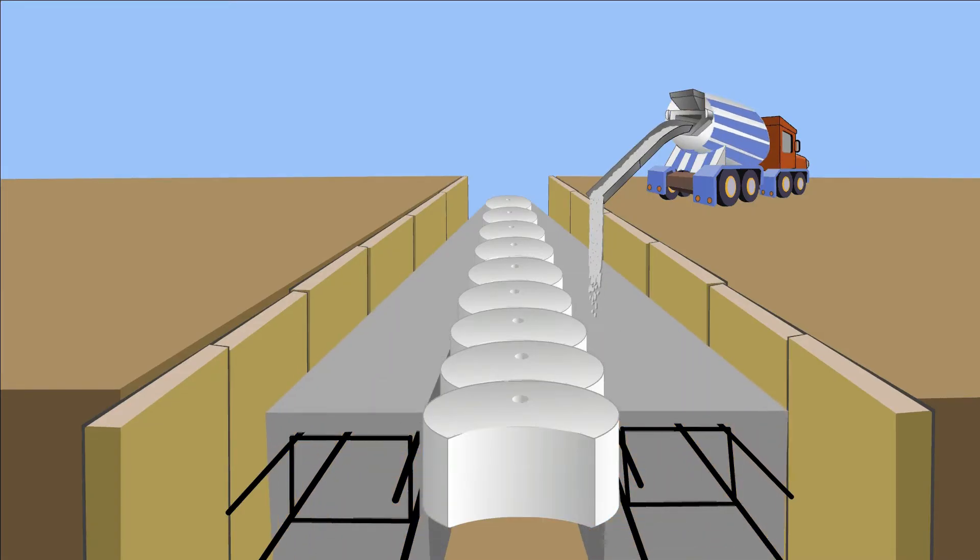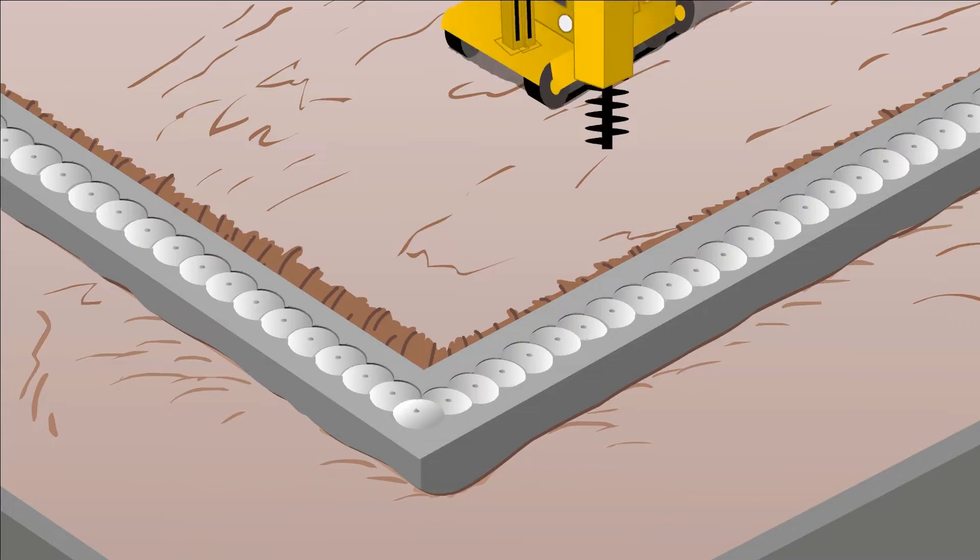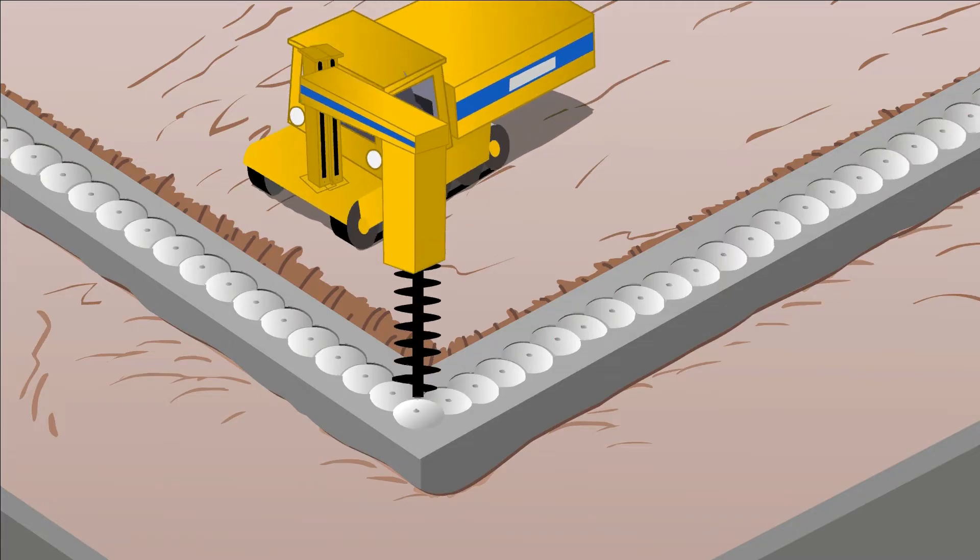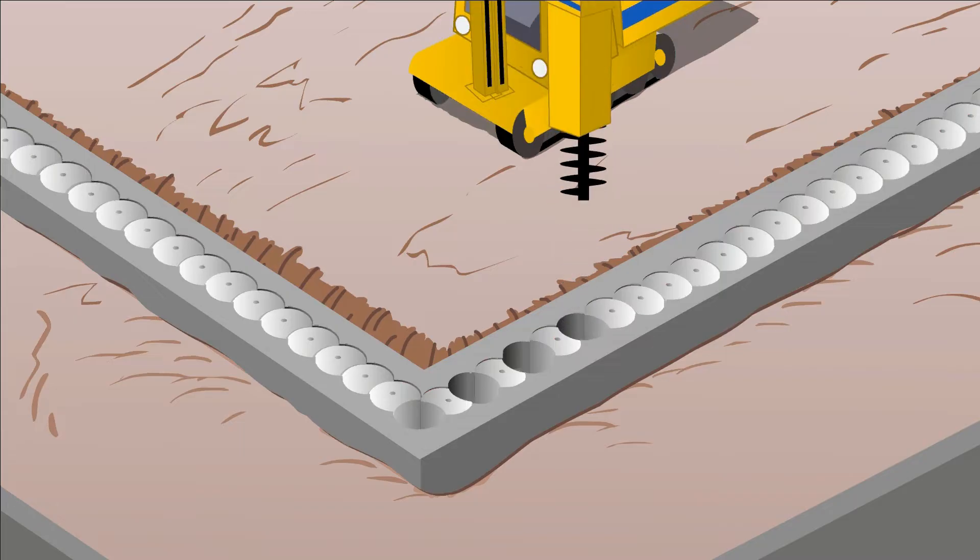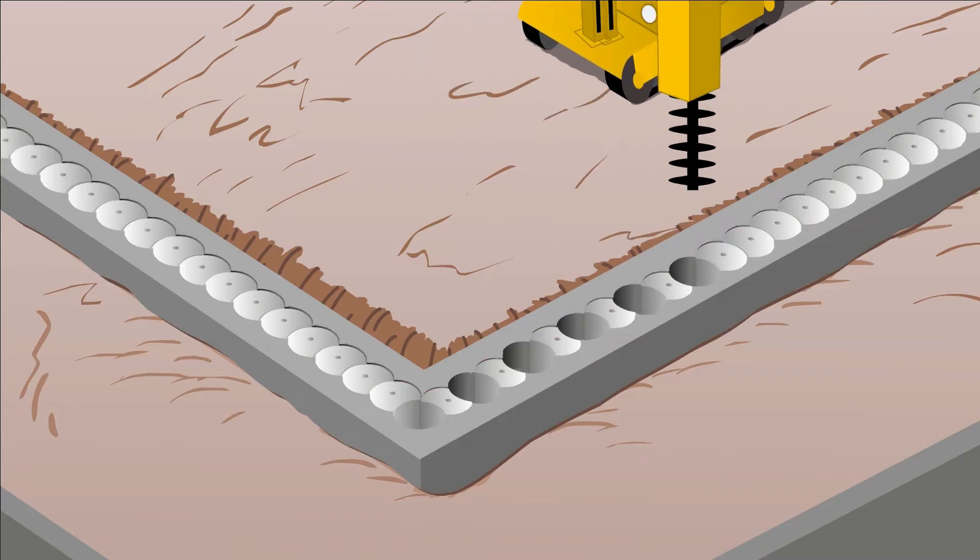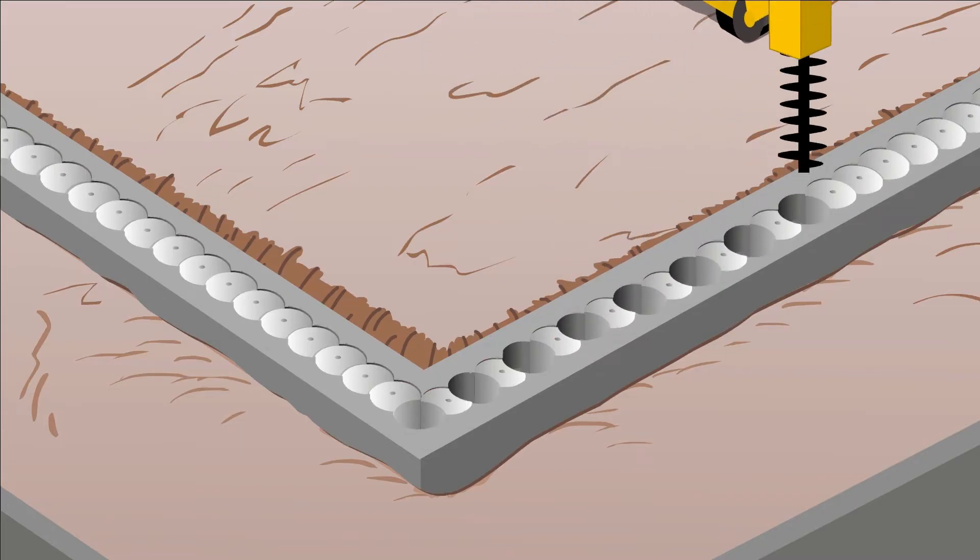When the guide wall is strong enough, the primary or female piles are constructed. The piling rig drills straight through the forms to achieve accurate placement. The primary piles are drilled out with alternate spacing to form the intersecting design required for a Secant wall.